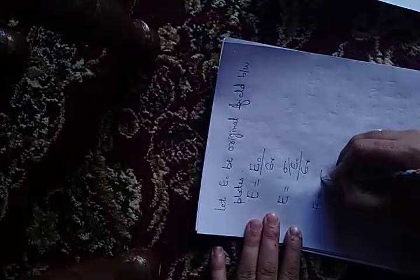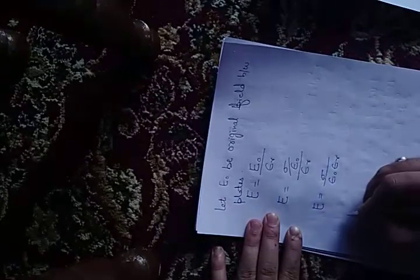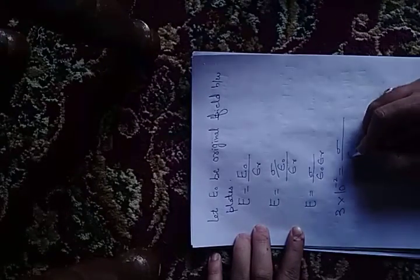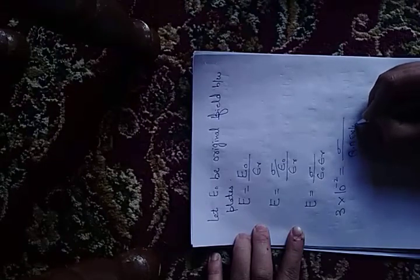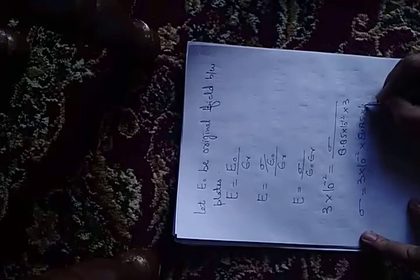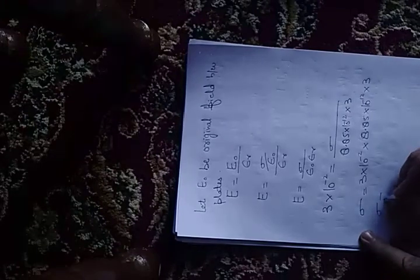Good! E₀ from Gauss's law is σ/ε₀. So E becomes σ/(ε₀εᵣ). E is 3×10⁻², σ we don't know, ε₀ is 8.85×10⁻¹², and εᵣ is 3. So σ will be 3×10⁻²×8.85×10⁻¹²×3. 3×3 is 9, 9×5 is 45, 9×8 is 72, 76. 79.65×10⁻¹⁴ coulomb per meter square.